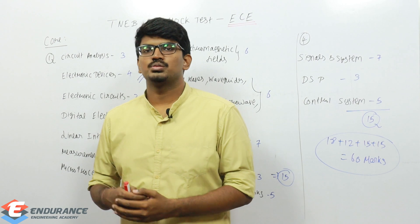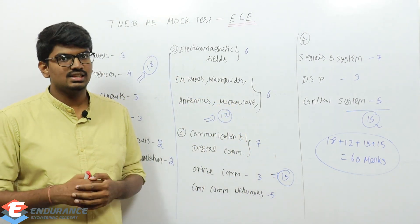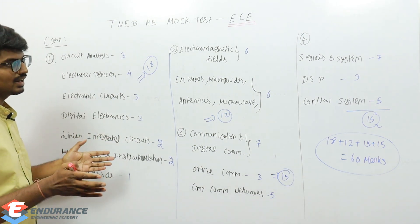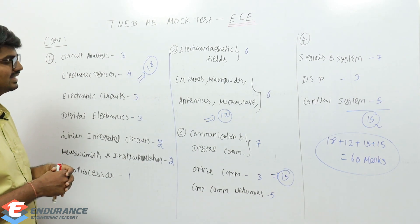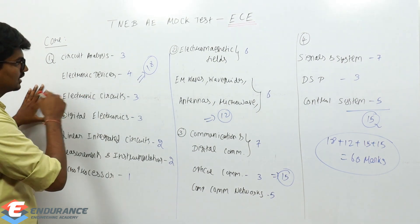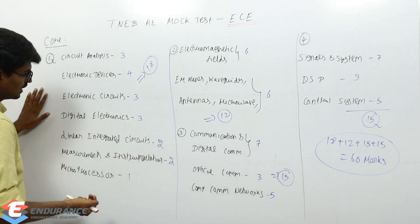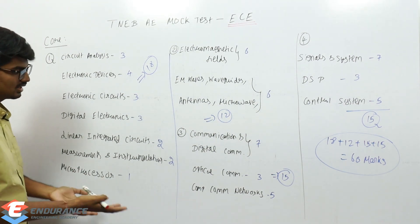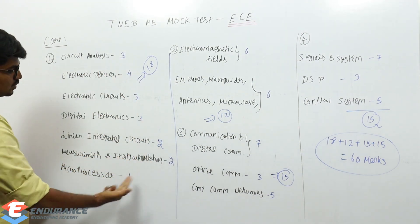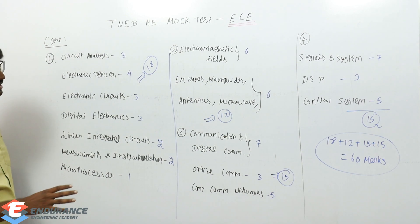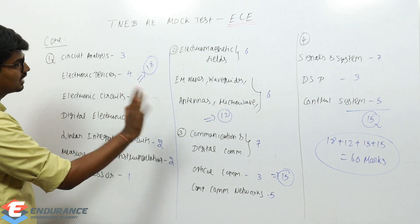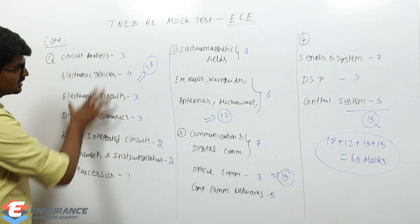This is how marks will be distributed approximately in our test series for ECE. TNEB splits ECE syllabus into four parts. The first part has circuit analysis, electronic devices, electronic circuits, digital electronics, linear integrated circuits, measurement and instrumentation, and microprocessor applications - approximately three, four, three, three, two, two, one marks respectively. It's approximate because few exams might contain four or two instead, but overall the first section will have 18 marks.